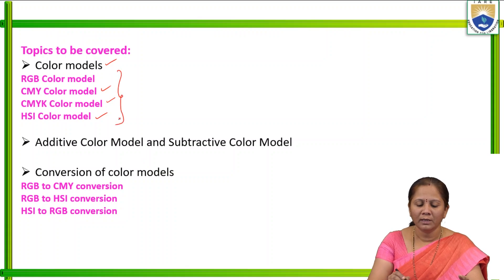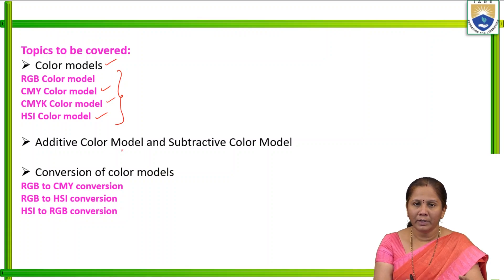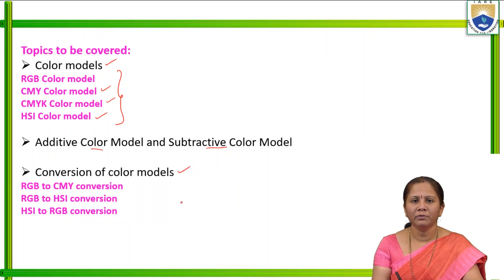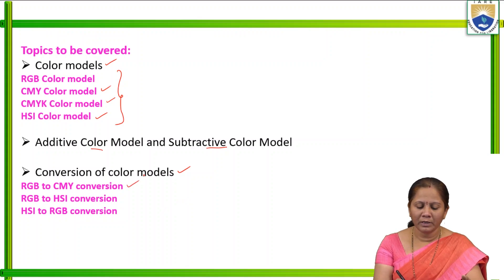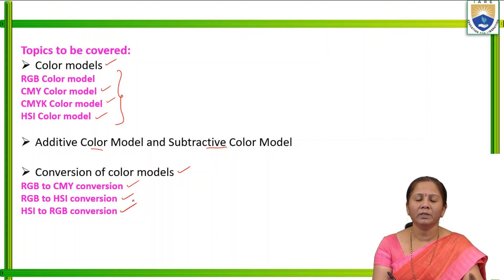We are going to discuss about these four types of color models, and then we will learn about what is additive color model and what is subtractive color model, the difference between these two, and then we will discuss conversion of one color model to another. We are going to learn three conversions: RGB to CMYK, RGB to HSI, and HSI to RGB.